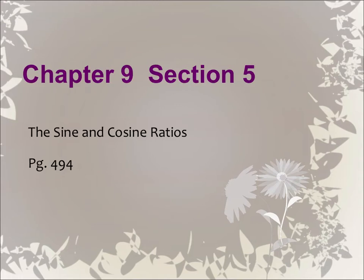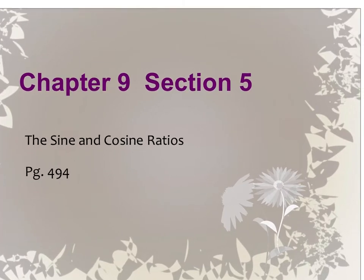Today we're going to cover section 5. We're going to learn two more ratios — the sine and the cosine ratios. So we have a total of three: sine, cosine, and then on Friday we covered the tangent ratio. Let's go ahead and see what the sine and the cosine ratio look like, and how we form fractions.